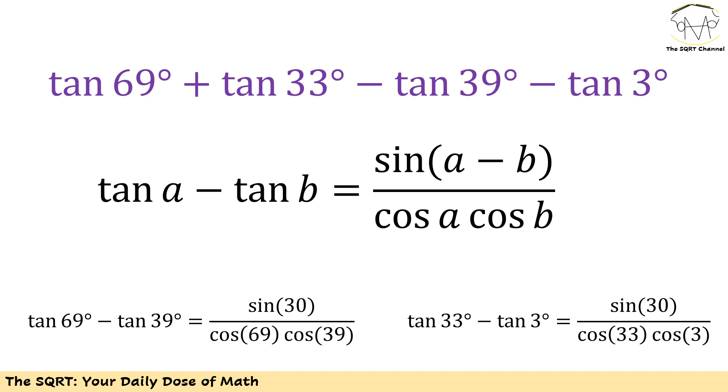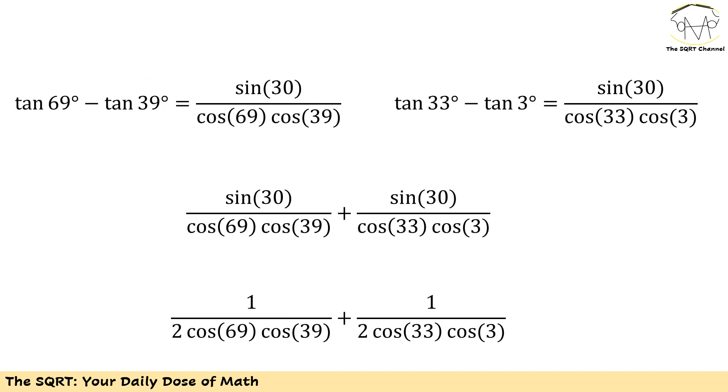I think it's kind of obvious because we are going to end up with 69 minus 39 which is 30, and we are going to use 33 minus 3 which is 30 again. Now if we do this you are going to see sin 30, cos 69, cos 39, cos 33 and cos 3. From here we need to simplify. I'm going to just start with using 1/2 instead of sin 30.